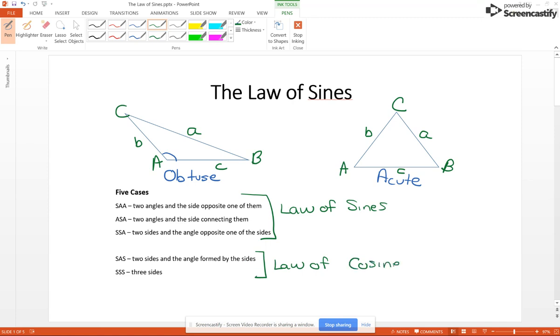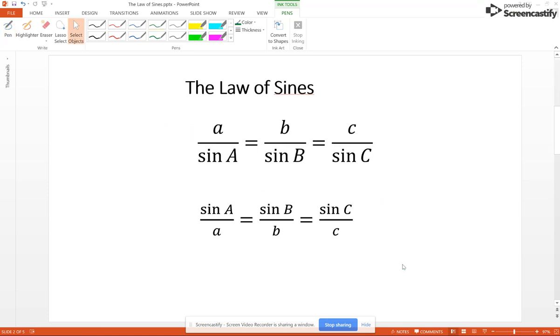Now let's look at the formulas. The law of sines is A over sine of A equals side B over sine of B equals C over sine of C. Now you use this formula if you're looking for a side.